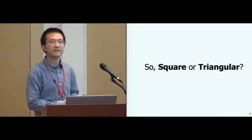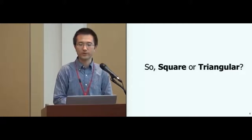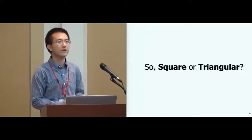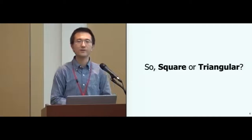So for undirected networks, which representation should we use? Square matrix or triangular matrix? This is still an open question.